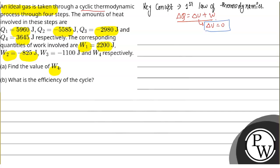What we can write is W1 plus W2 plus W3 plus W4 is equal to Q1 plus Q2 plus Q3 plus Q4.